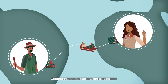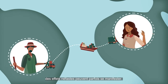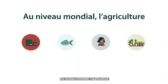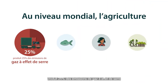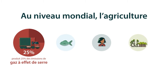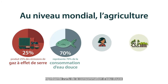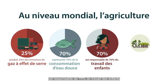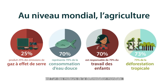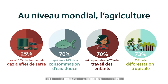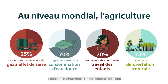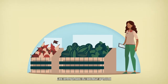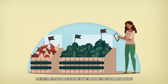However, at times there can be harmful impacts along the way that can take place from the farm to your table. Globally, the agricultural sector contributes up to 25% of all greenhouse gas emissions, uses approximately 70% of freshwater resources, accounts for 70% of child labour, and is a driver of global deforestation, accounting for up to 73% of tropical deforestation.